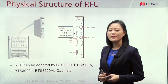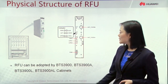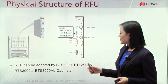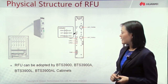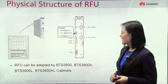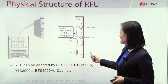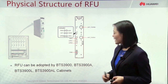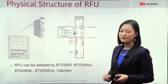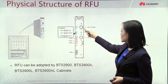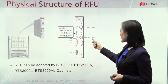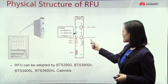Now let's look at the physical structure of RFU. As we introduced, the RFU is normally installed inside a cabinet. It can be adopted by BTS 3900, BTS 3900A, the indoor BTS, and BTS 3900L and AL outdoor BTS. Here are the interfaces and indicators of the RFU board. Because it is installed inside a cabinet, all the ports and interfaces come out from the front panel. We can see two large round connectors, which are antenna ports.